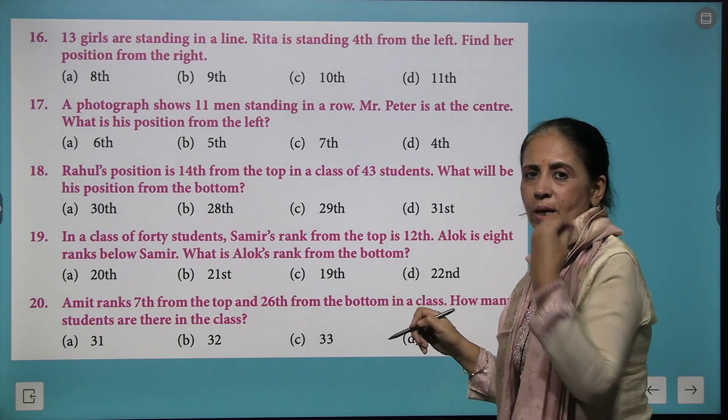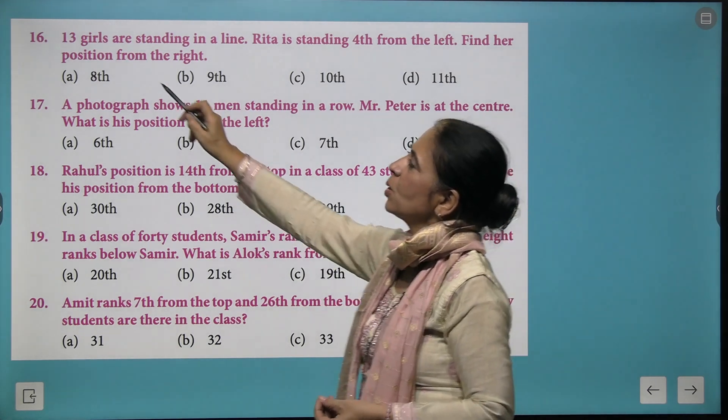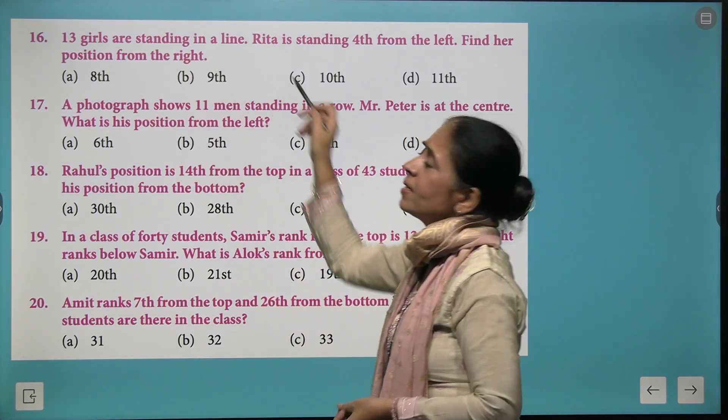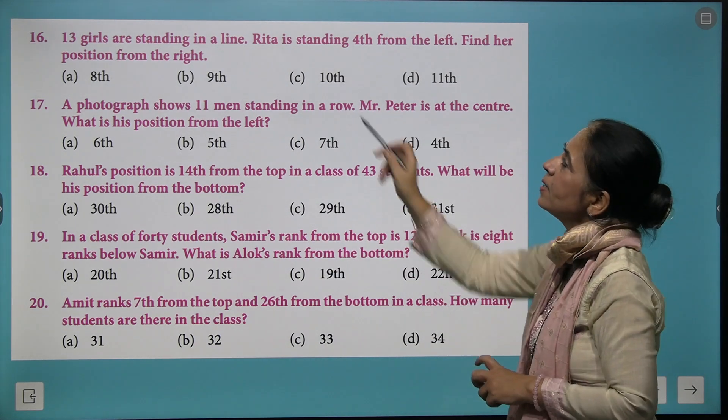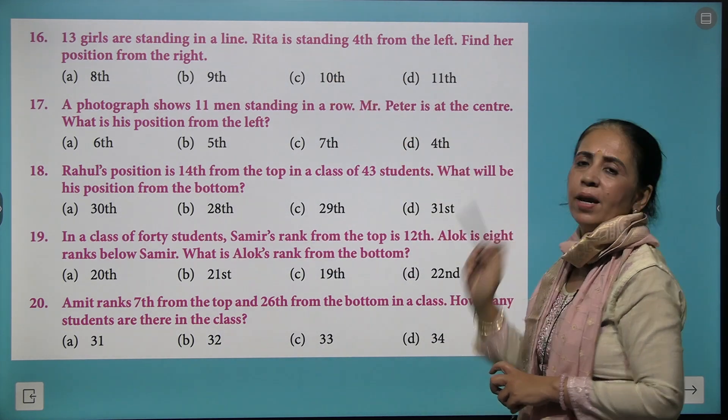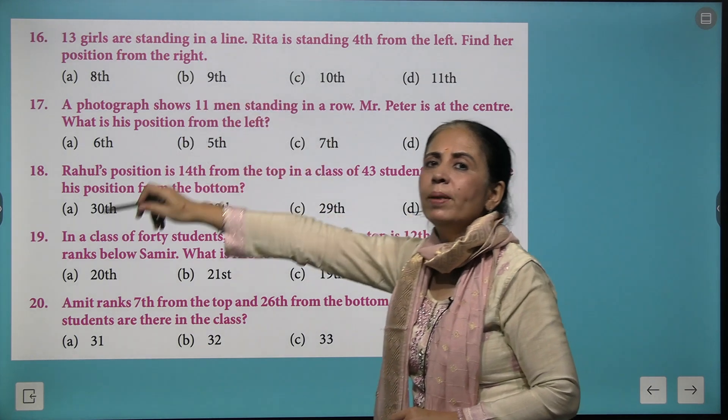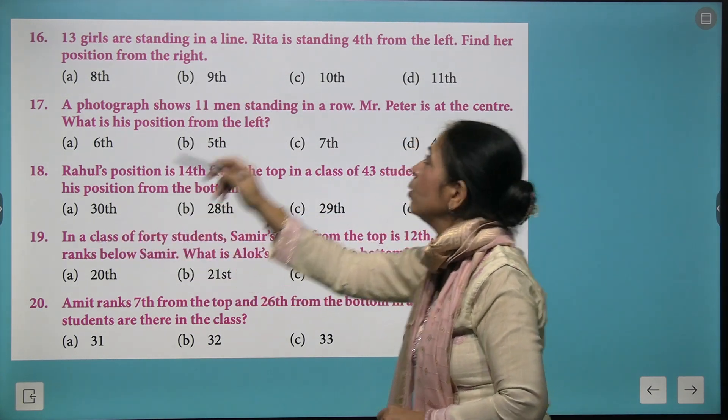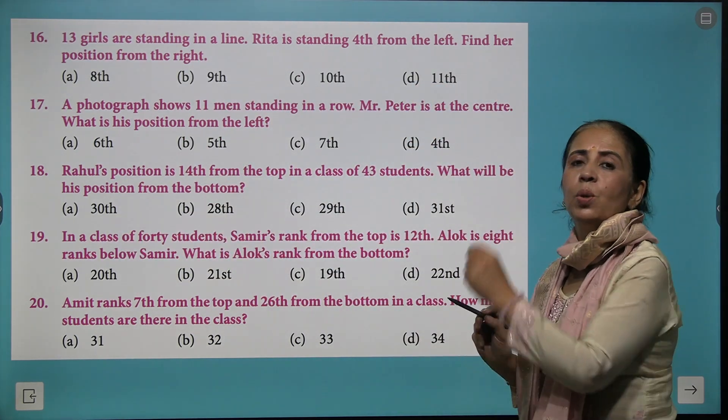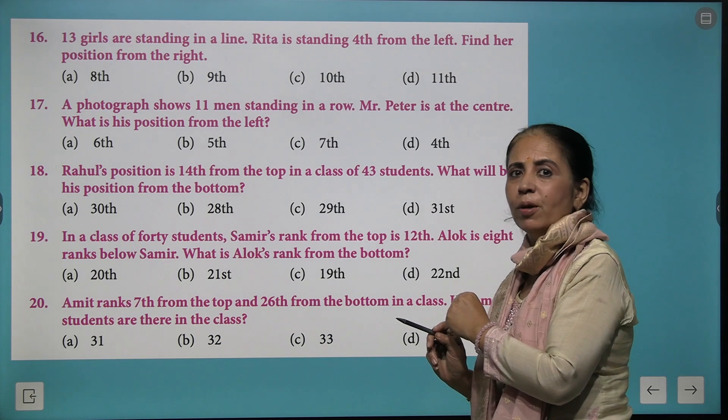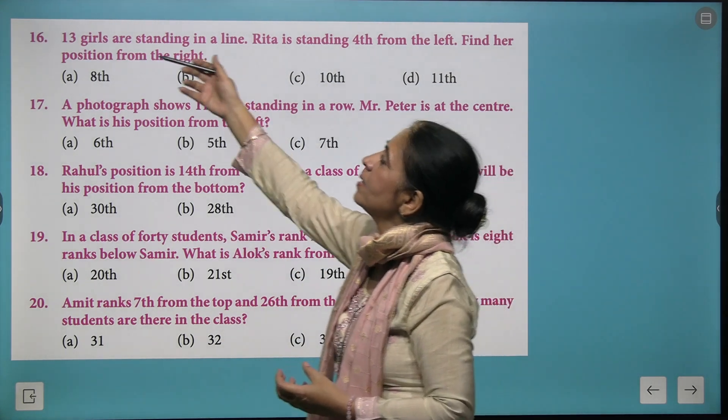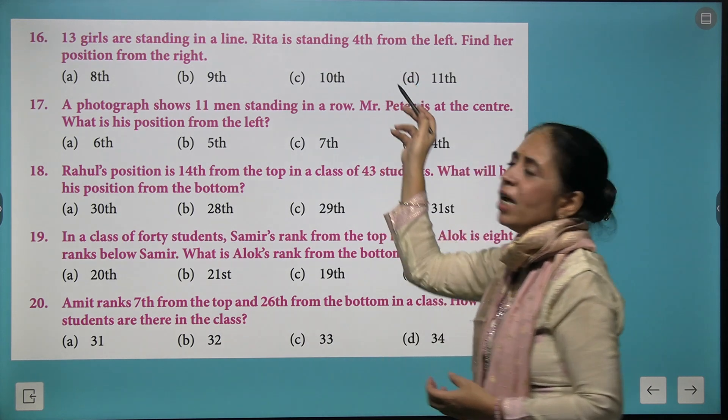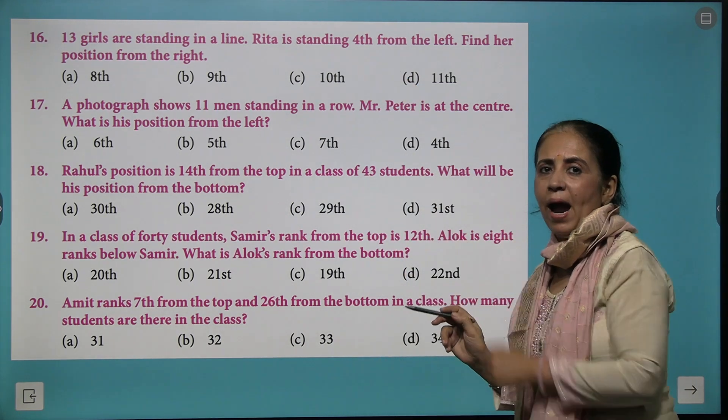Let's look at this question: 13 girls are standing in a line. Rita is standing fourth from the left. The question is, you need to find her position from the right. Very simple, total number of girls is 13, you take away 4 and add 1 to it.